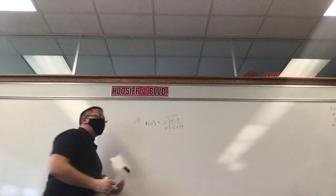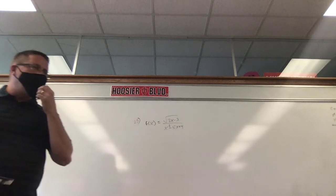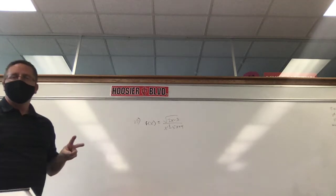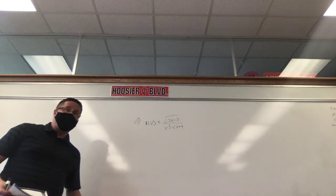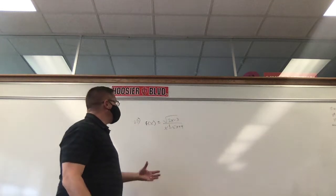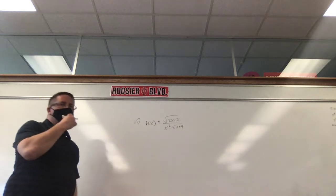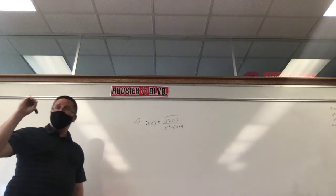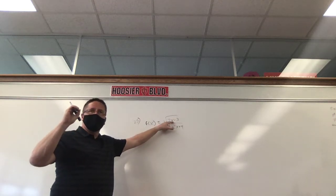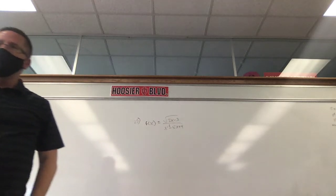They're asking for the domain. Really, the domain's going to be all real numbers except there are two limitations: when you have a zero on bottom, or you have a negative inside of a radical. Let's look at the top. Could I plug in zero for x? No, because if I plug in zero, two times zero is zero, zero minus three is negative three, and we can't take the square root of negative three.